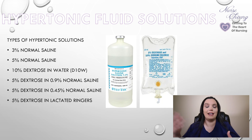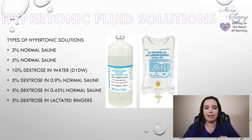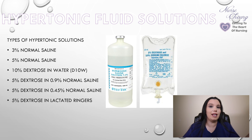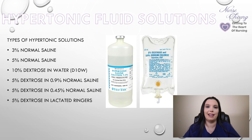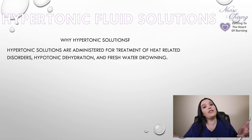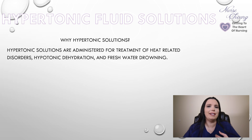Since hyper means high, we're looking for high numbers — not fraction numbers. Examples include 3% normal saline, 5% normal saline, 10% dextrose in water, 5% dextrose in 0.9% normal saline, 5% dextrose in 0.5% normal saline, and 5% dextrose in lactated Ringers. The reasons we give these solutions include heat-related disorders, hypotonic dehydration, and freshwater drownings.